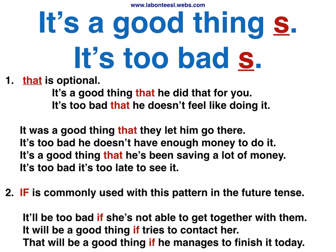Pattern: 'It's a good thing' sentence. 'It's too bad' sentence. Note: 'that' is optional. It's a good thing that he did that for you. It's too bad that he doesn't feel like doing it.